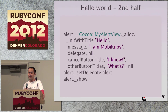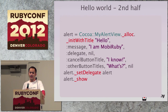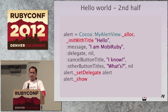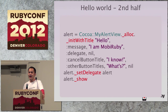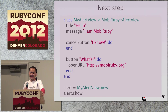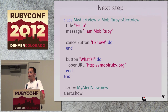MyAlertView defined in Ruby code is both a Ruby class and an Objective-C class — both sides can access it. In the second half, we create a MyAlertView instance and show the alert box. When you call an Objective-C method, you need to prefix it with an underscore. Currently, if you want to build an iOS application with MobiRuby, you need to understand Objective-C and Cocoa libraries. I think that's nonsense too.